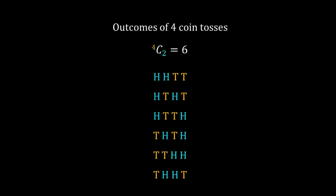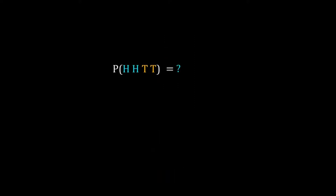We can have two heads in four-choose-two ways. Let's calculate the probability of HHTT. Since each toss is independent, this probability equals the probability of head times probability of head times probability of tail times probability of tail — that is, p_h squared times p_t to the power of (4 minus 2).